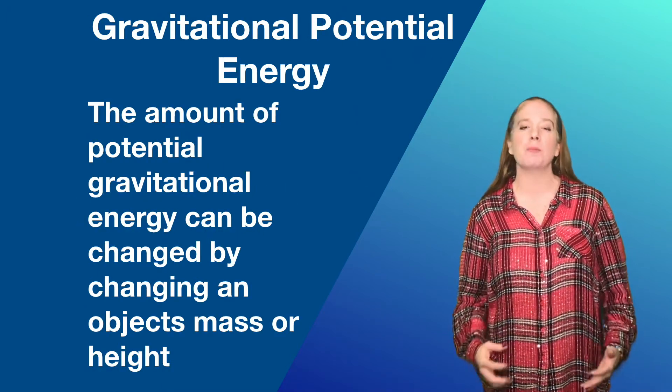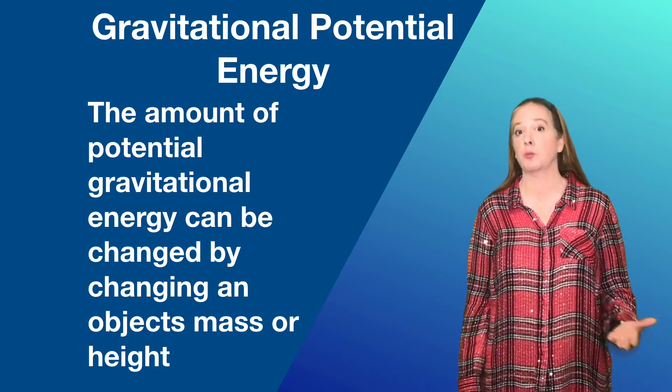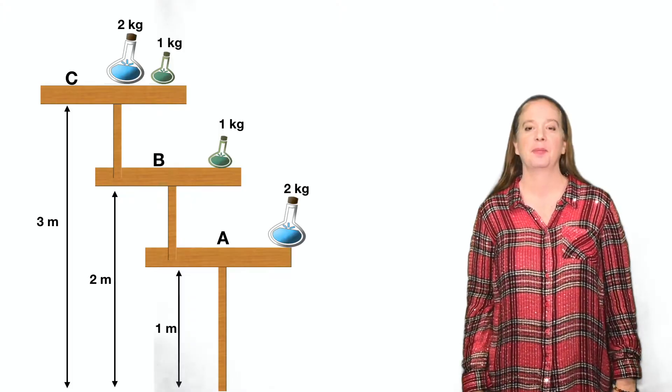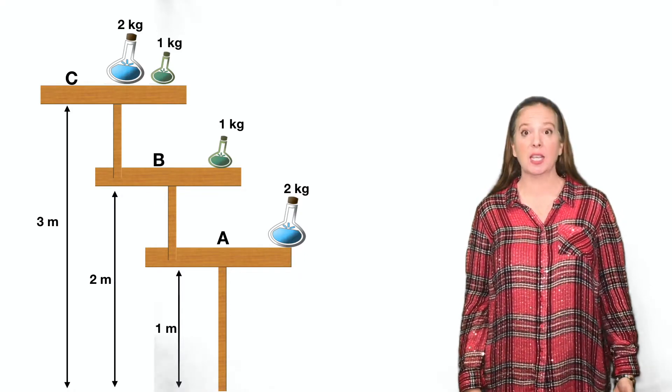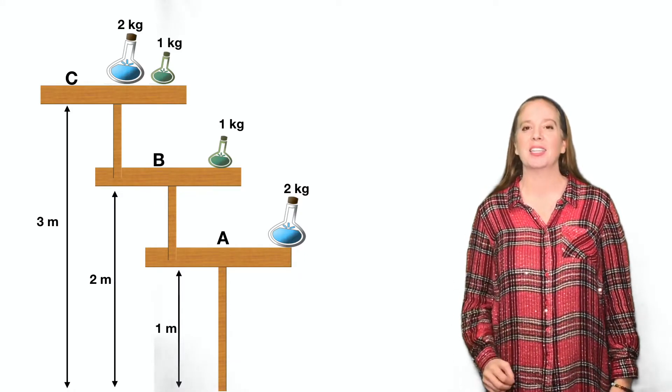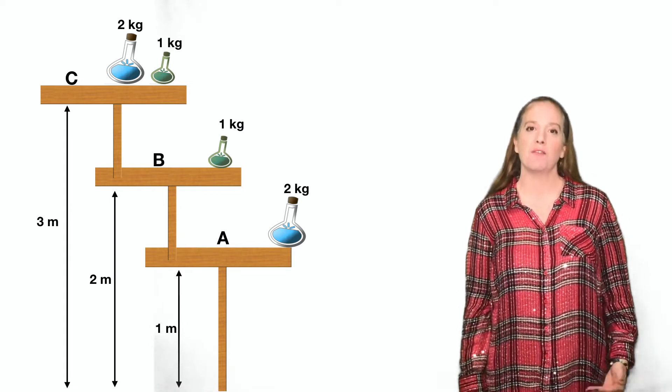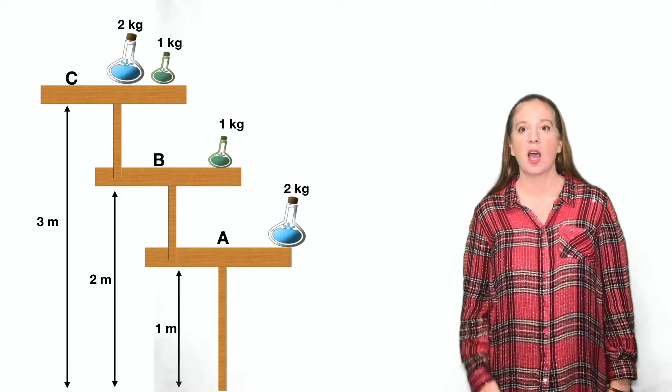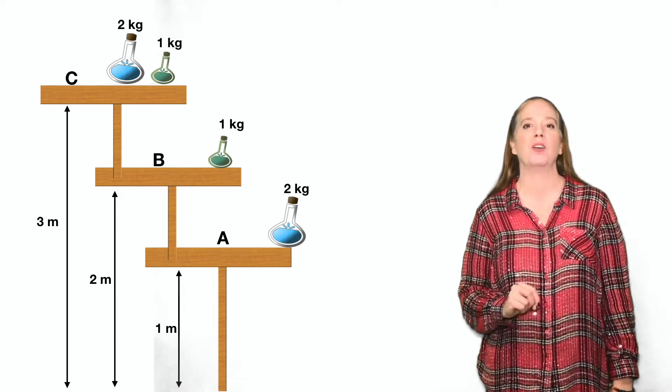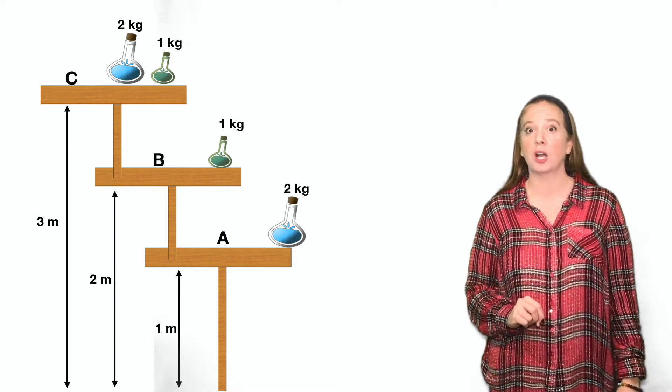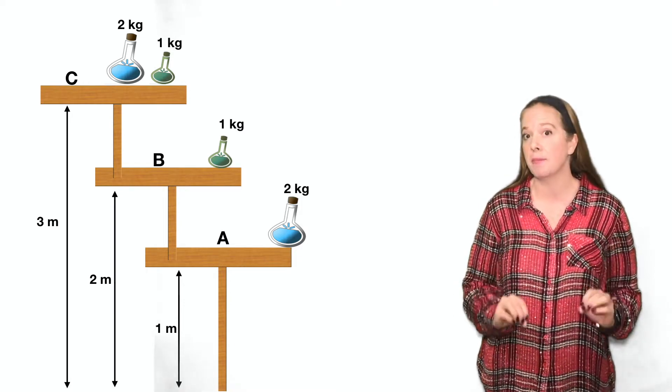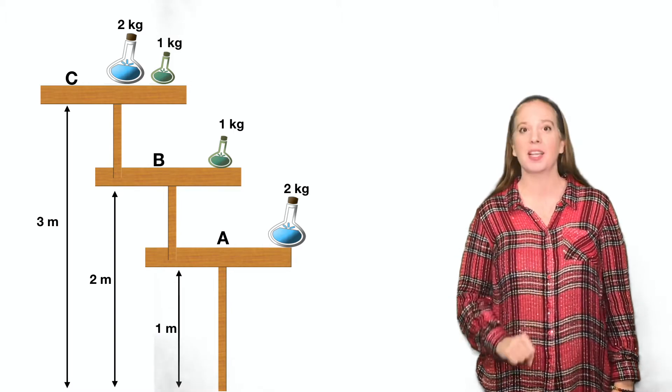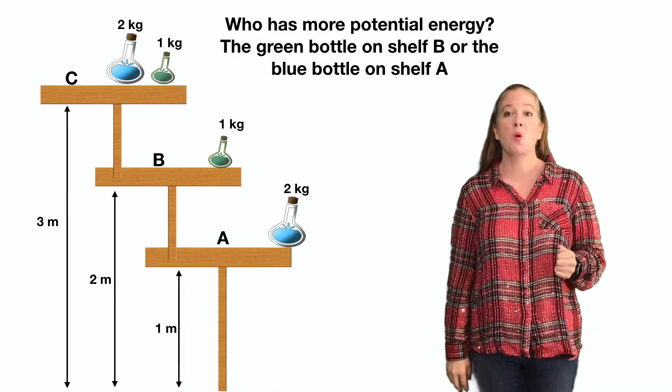The amount of potential energy can change by changing the object's mass or its height. When we compare the bottles on shelf C, which are at the same height, the blue bottle would have more potential energy than the green bottle because it has more mass. When we compare the blue bottle on shelf C to the blue bottle on shelf A, which have the same mass, the blue bottle on shelf C would have more potential energy because it's higher.